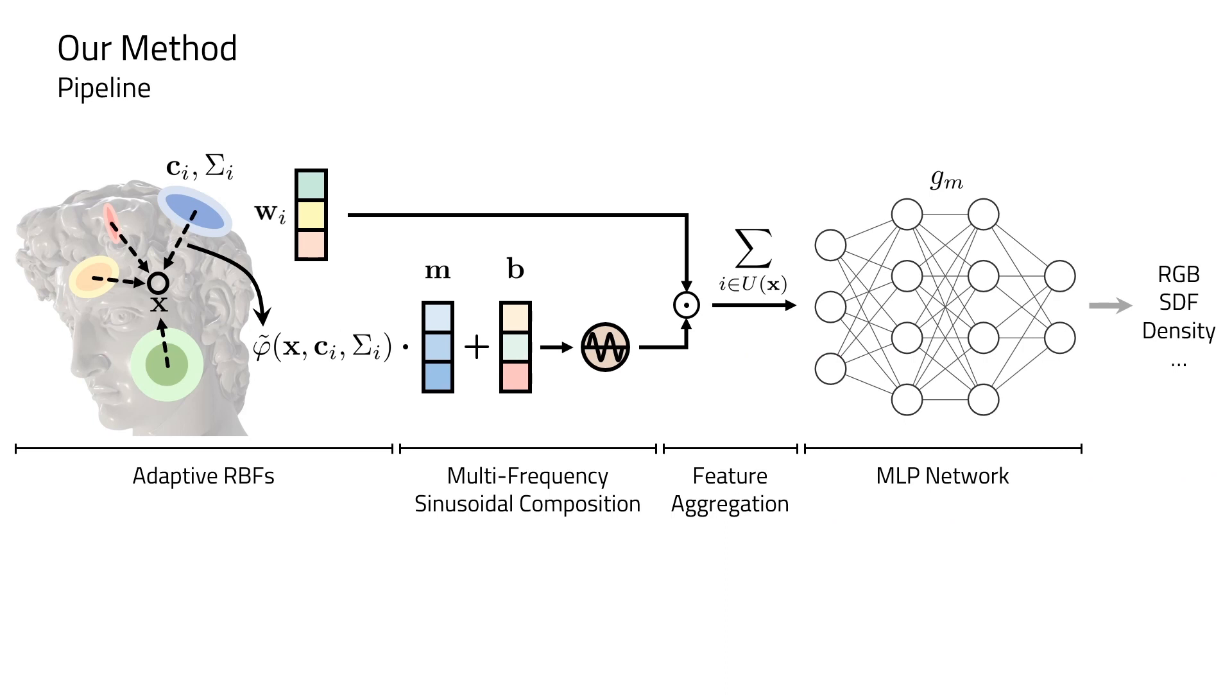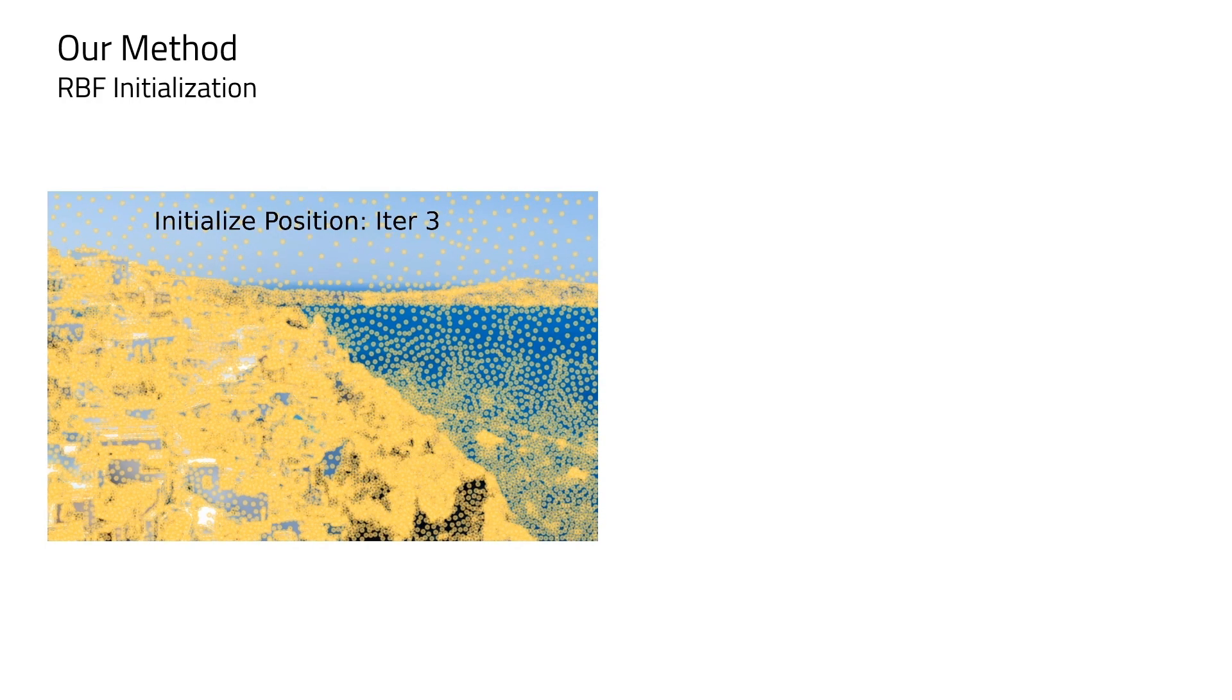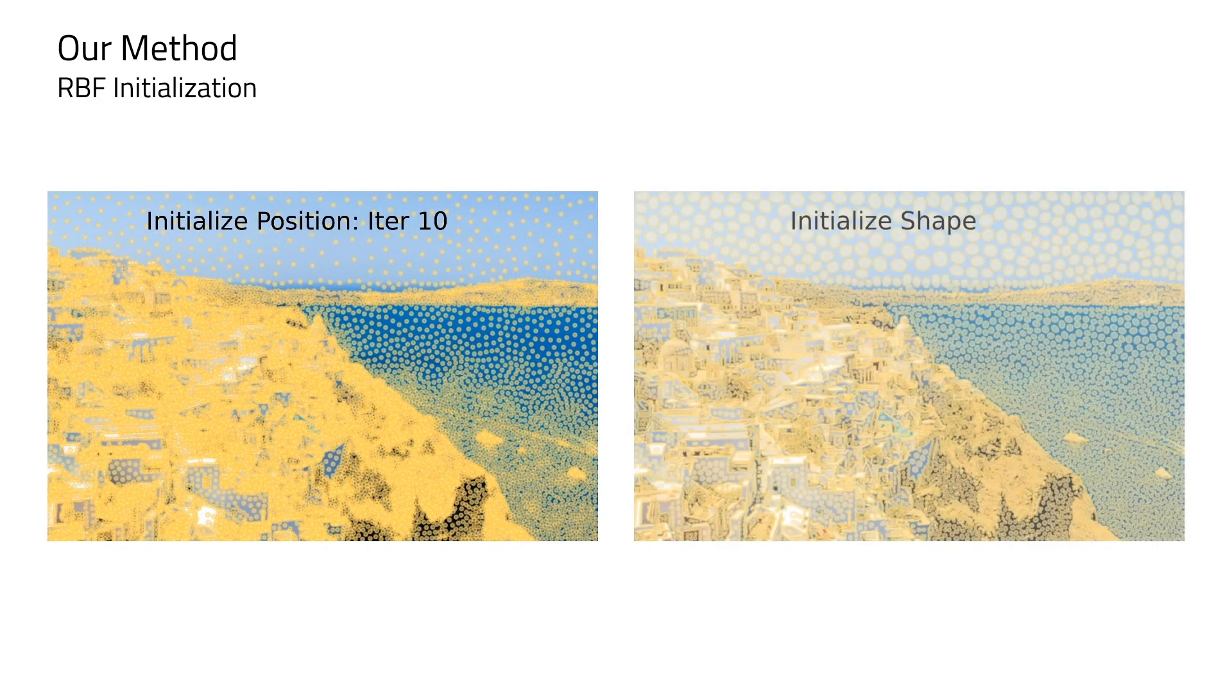The features are then aggregated and go through a MLP network to reconstruct target signals. To initialize the position and shape of RBFs, we use weighted camions and intra-cluster covariance. This example visualizes the process.